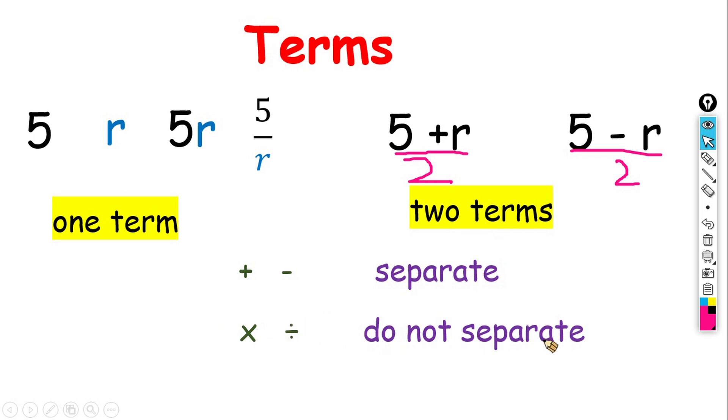Like this. 5 multiplied with r, it will become 1 term. When 5 divided by r, it will become 1 term too.